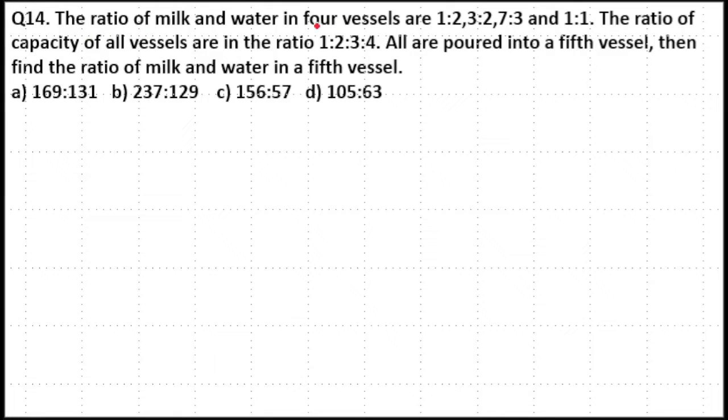The ratio of milk and water in four vessels are 1:2, 3:2, 7:3, and 1:1. The ratio of capacity of all vessels are in the ratio 1:2:3:4. All are poured into a fifth vessel. Then find the ratio of milk and water in the fifth vessel.